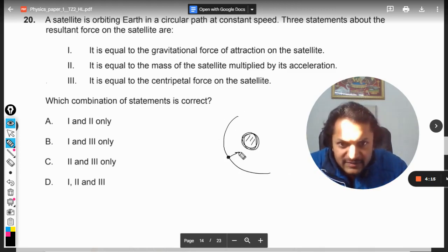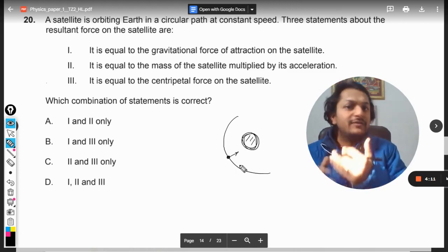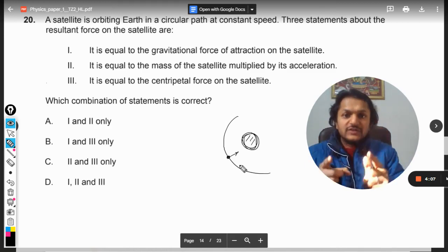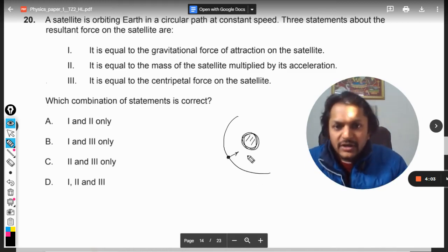That will be like that, otherwise diagram will become very difficult. Okay, so this is now moving in a circular orbit, so it means that it is being acted upon by a force which is perpendicular to the velocity vector, which is acting like centripetal force for this particular satellite.